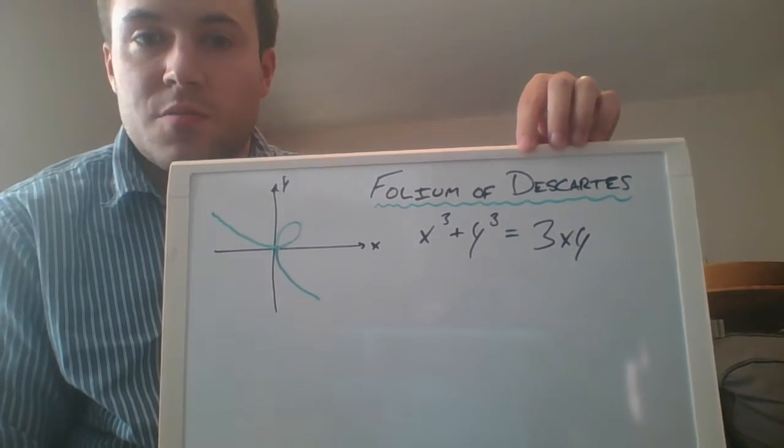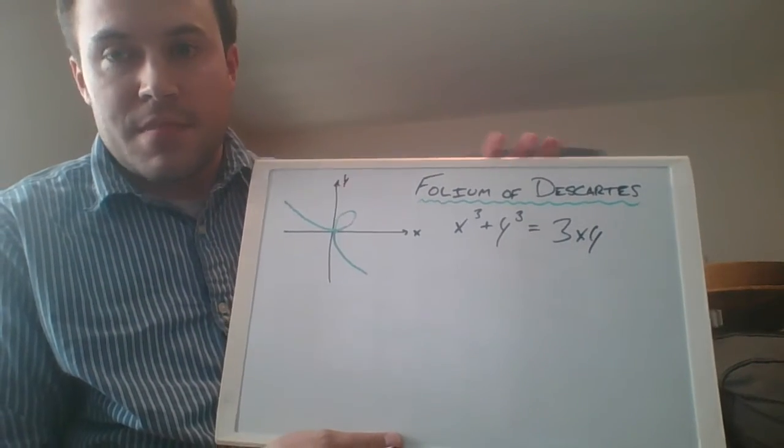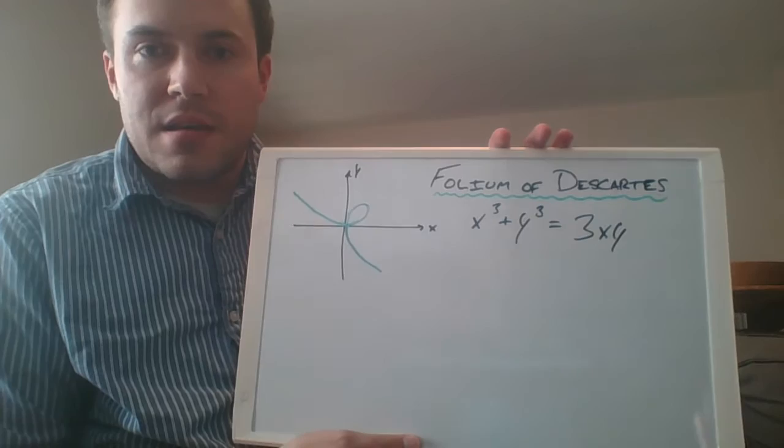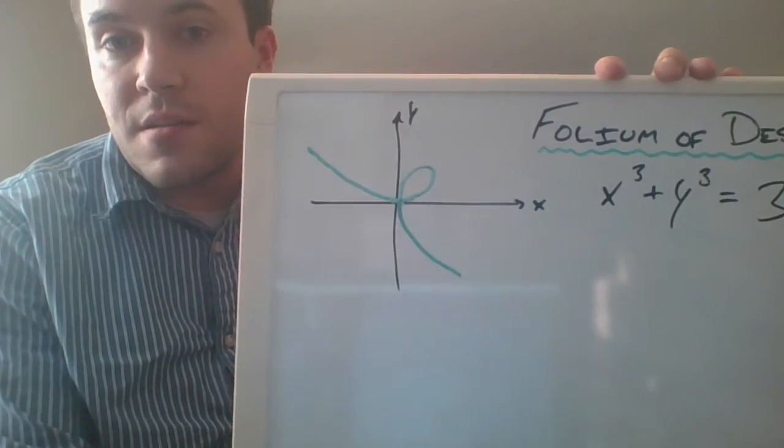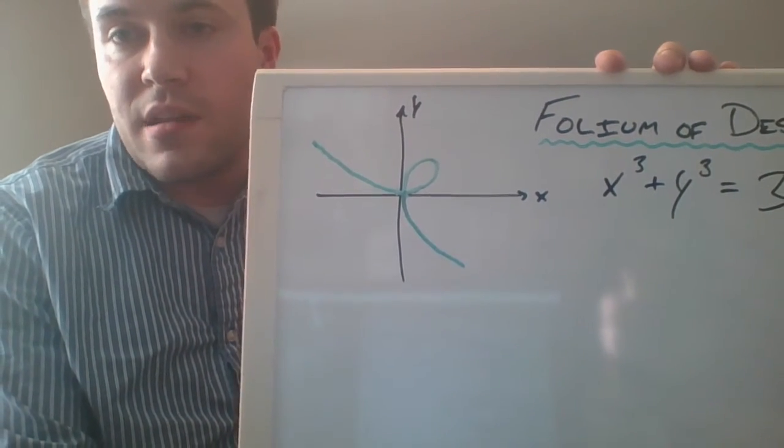The formula for this curve is given by x cubed plus y cubed equals 3xy. The problem we're going to do is to find a point other than the origin that has a horizontal tangent line.